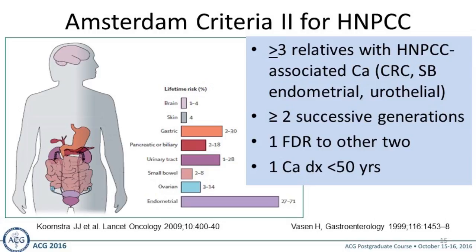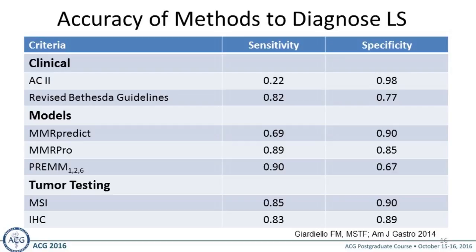What is the accuracy of these methods for diagnosing Lynch syndrome? The Amsterdam Criteria 2 has a sensitivity of only 22%, though good specificity. The revised Bethesda criteria, which are pathologically based, have better sensitivity but slightly less specificity than Amsterdam Criteria 2. Online models like PREMM-126 have sensitivity up to 90% but lower specificity of 67%. Tumor testing using MSI or IHC has probably the highest overall sensitivity and specificity compared to phenotypic pedigrees or computational models.